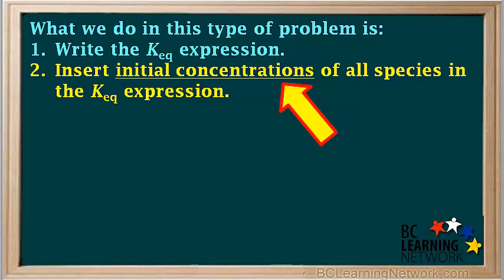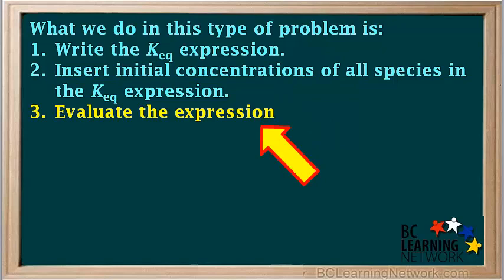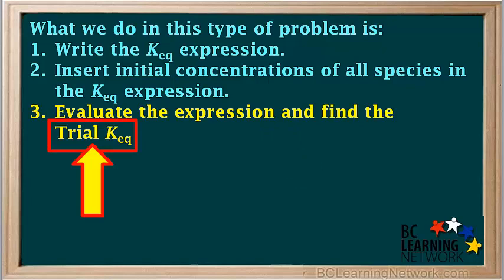Then we insert initial concentrations of all species into the Keq expression. This is different from other equilibrium problems where we insert equilibrium concentrations into the expression. Next we evaluate the expression, but because we are not usually at equilibrium at this point, what we get cannot be called Keq. When we've inserted initial concentration values into the expression, we call it the trial Keq. It tells us what the ratio of products to reactants is right at the very beginning, when we initially add the substances to the container.